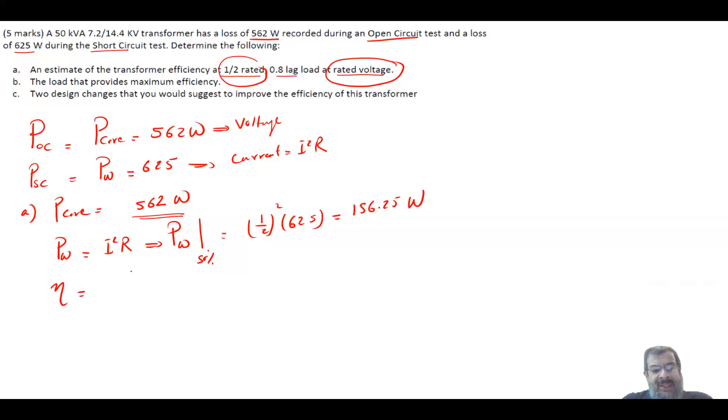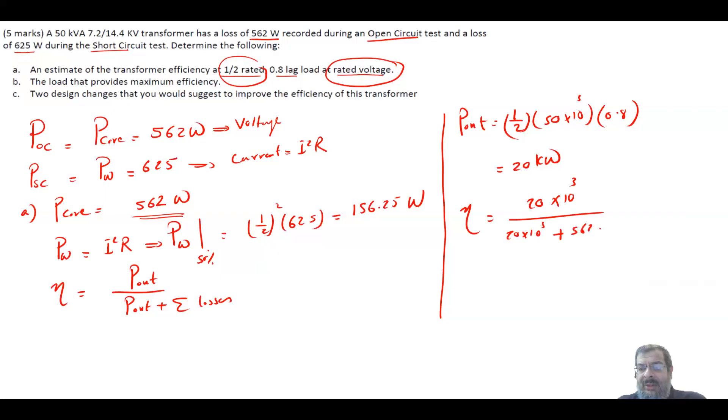Now, what is the efficiency? The efficiency is Pout over Pout plus summation of the losses. We know the losses, we need to find Pout. What is Pout? Pout is equal to one half, because it's half the load, times the kVA rating, which is 50 times 10 to the power of 3, times the power factor, which is 0.8. That is your power, which is equal to 20 kW. So your efficiency is equal to 20 times 10 to the power of 3, divided by 20 times 10 to the power of 3 plus 562 plus 156.25, times 100. And this will give me an efficiency equal to 96.53%.